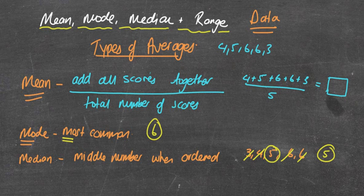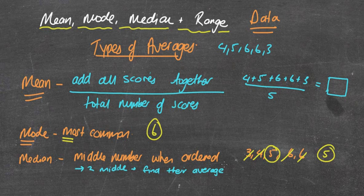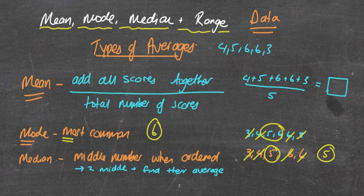There are occasional times where you might get two middle numbers. In that case, we find their average by adding them together and dividing by 2. For example, let's say we had 3, 4, 5, 6, 6, and 8. I'd cross them off from either end. Then I have 5 and 6, so I do 5 plus 6 and divide it by 2, which gives me 5.5.